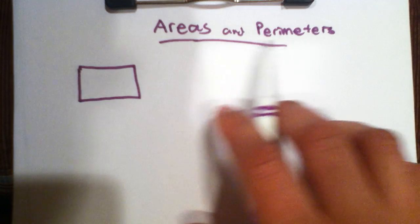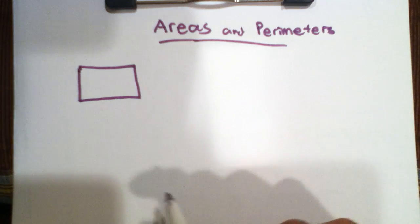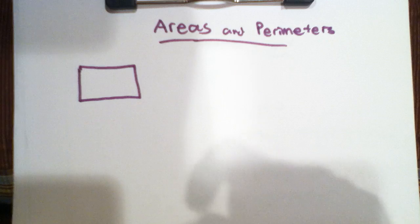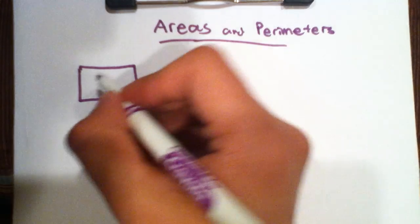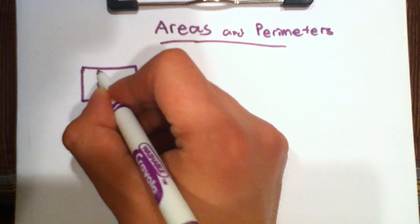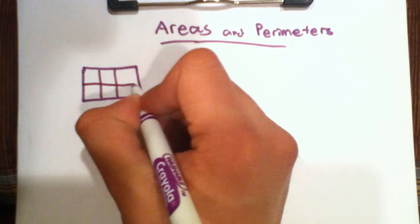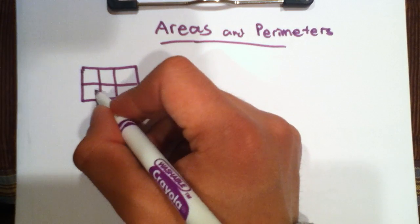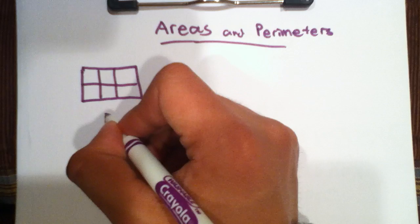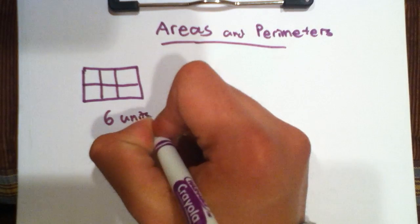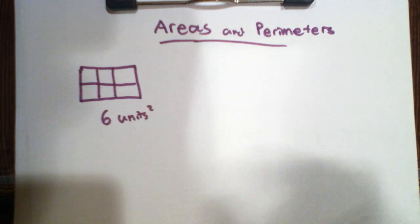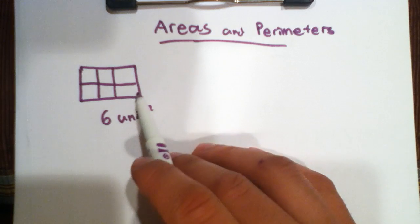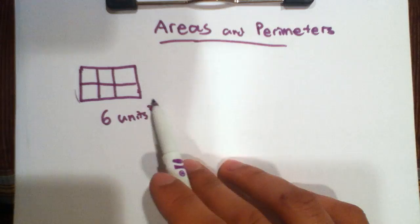Today, I would like to discuss areas and perimeters of basic geometry shapes. Let's start by defining what an area is. You may have first learned about the definition of area by having a rectangle that is divided up into different squares that we would call units and counting them up and saying that the area of this rectangle is 1, 2, 3, 4, 5, 6 units squared. And the perimeter is basically the distance around the shape.